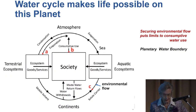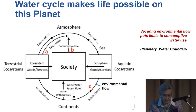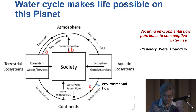The water cycle is what makes life possible here. This diagram shows the water circulation from atmosphere to the land, to the ocean, and back to the atmosphere. On the land, the precipitation supports plant production, returning the water consumed as vapor back to the atmosphere. Remaining water forms runoff, feeding the river system. The vegetation forms terrestrial ecosystems, providing society with ecological services.